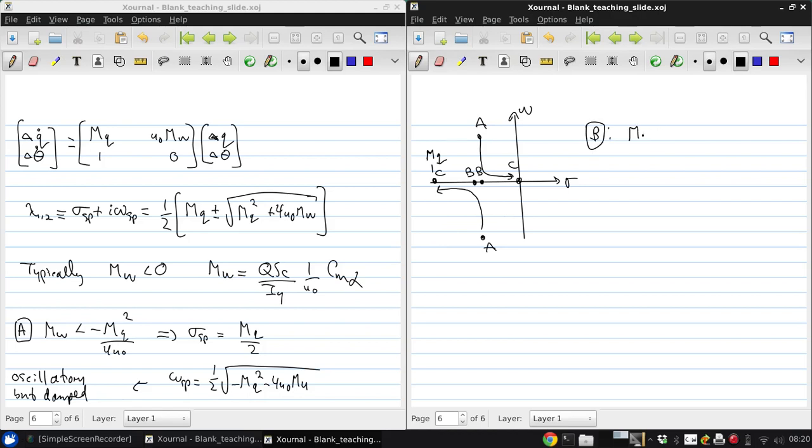So now if we consider scenario B, which is MW equals negative MQ squared over 4U naught, then what we get is that sigma SP is still one half MQ, but omega SP is zero. And this is what we call critically damped. So there won't be any oscillation because the frequency is zero. So since we're over here on the negative real axis, the motion will monotonically decay.